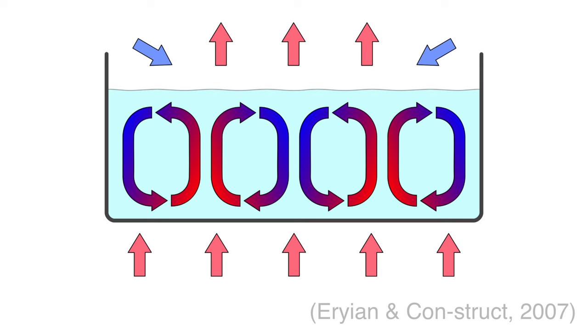This picture here is from Wikipedia, some illustrators called Eryian and Construct 2007. They're illustrating the same thing that we saw in the chickpea beaker. The heat is being applied at the bottom of the beaker and so everything that is closest to that side is going to be much warmer than the top.